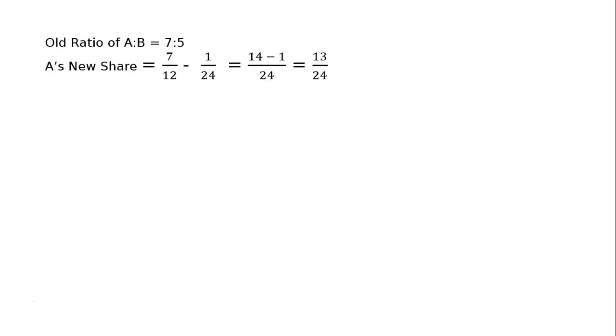A's new share: 7 upon 12. And question is, 1/24th lelia. He took 1/24th, acquires 1/24th from A. So 1/24th, if you minus from A, then LCM 24, 7 to 14 minus 1 numerator. Then 13 upon 24.